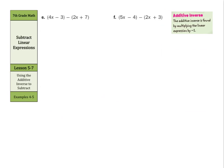So now, as we continue practicing these more difficult questions, we would have 4x minus 3 minus 2x plus 7. Well, if we change this subtraction into an addition, we keep the first one, 4x minus 3. The opposite of a positive 2x is a negative 2x, and the opposite of a plus 7 is minus 7. So now negative 3 plus negative 7 is negative 10. 4x plus negative 2x is 2x. So 2x minus 10.